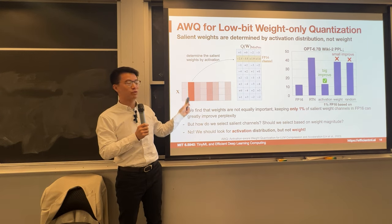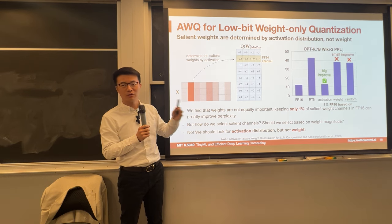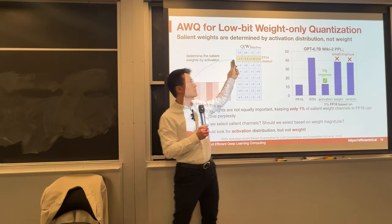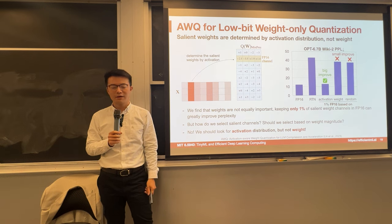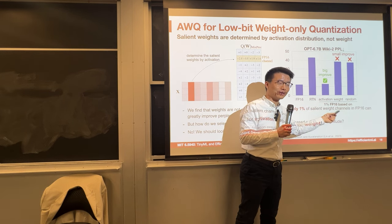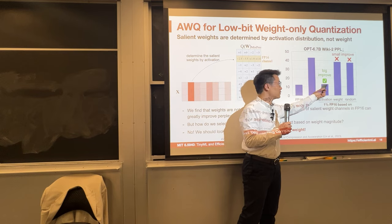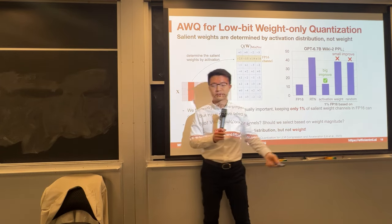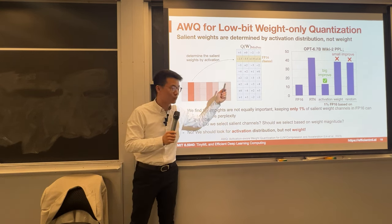Say this is an outlier channel — a pretty big activation channel — and it is consistent across different inputs and tokens. If this channel is big in the activation, the corresponding weight is considered salient or important, and we should keep it. Using activation rather than the weight is why we call it activation-aware weight-only quantization (AWQ). You are quantizing the weight, but you look at the activation to determine which weight is salient.